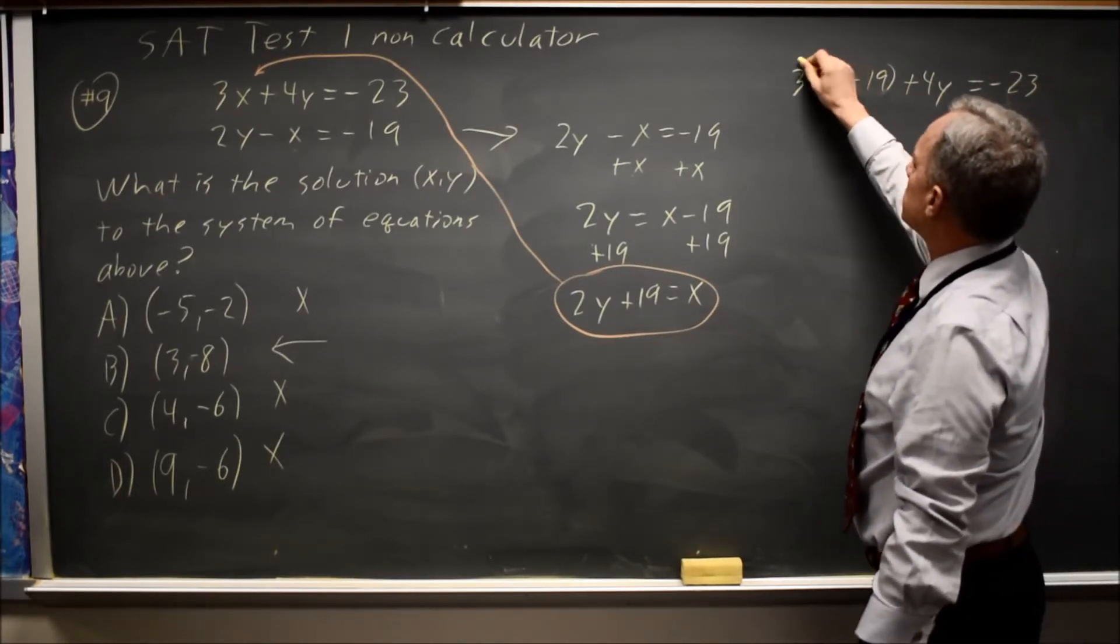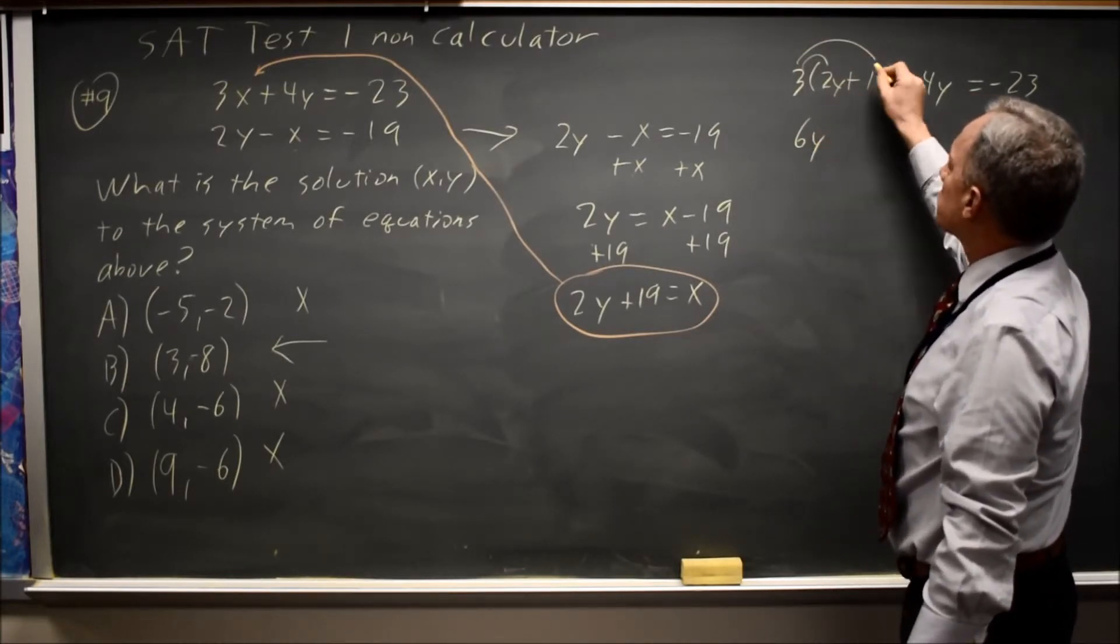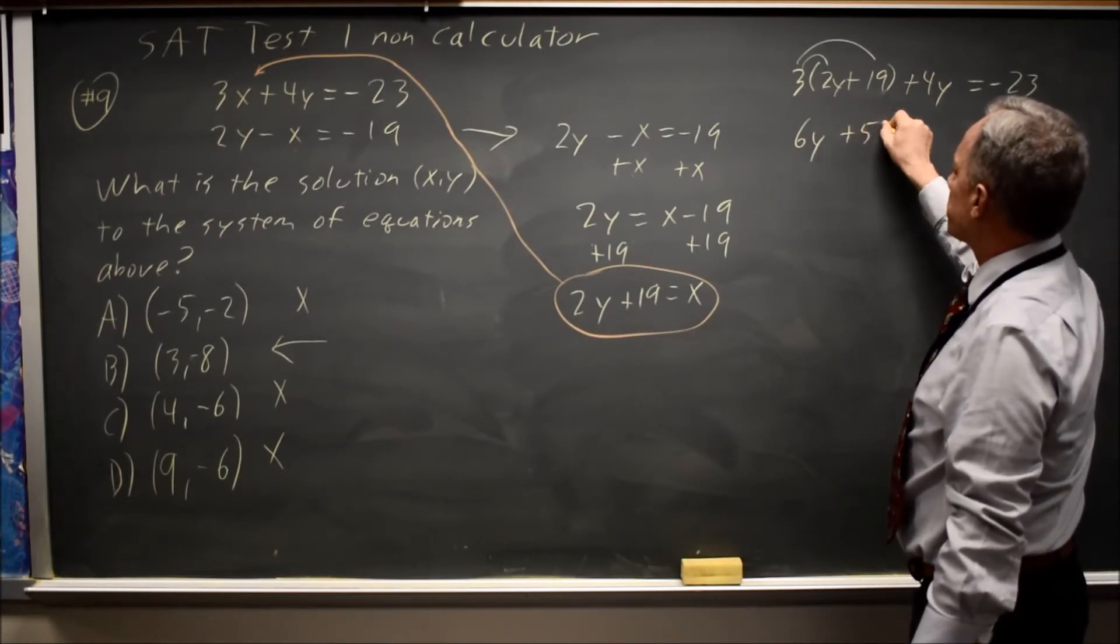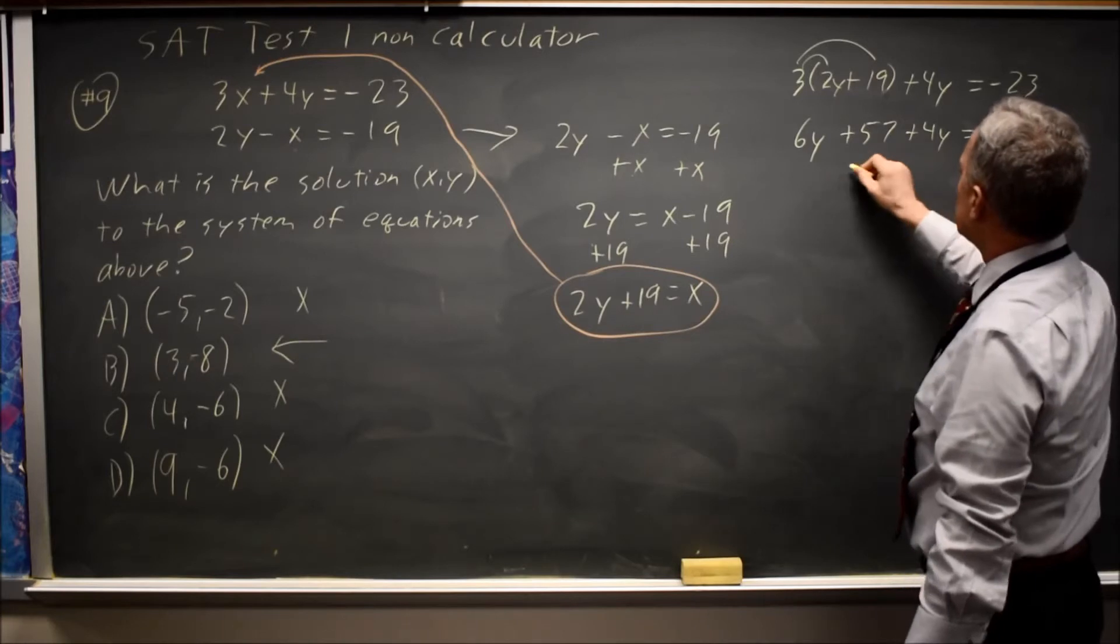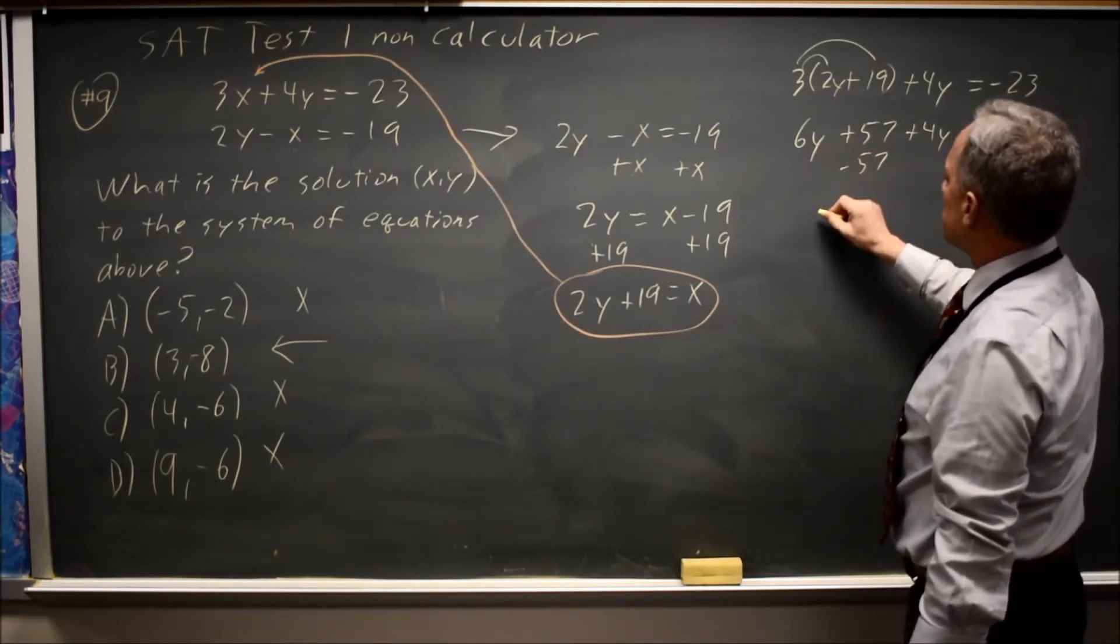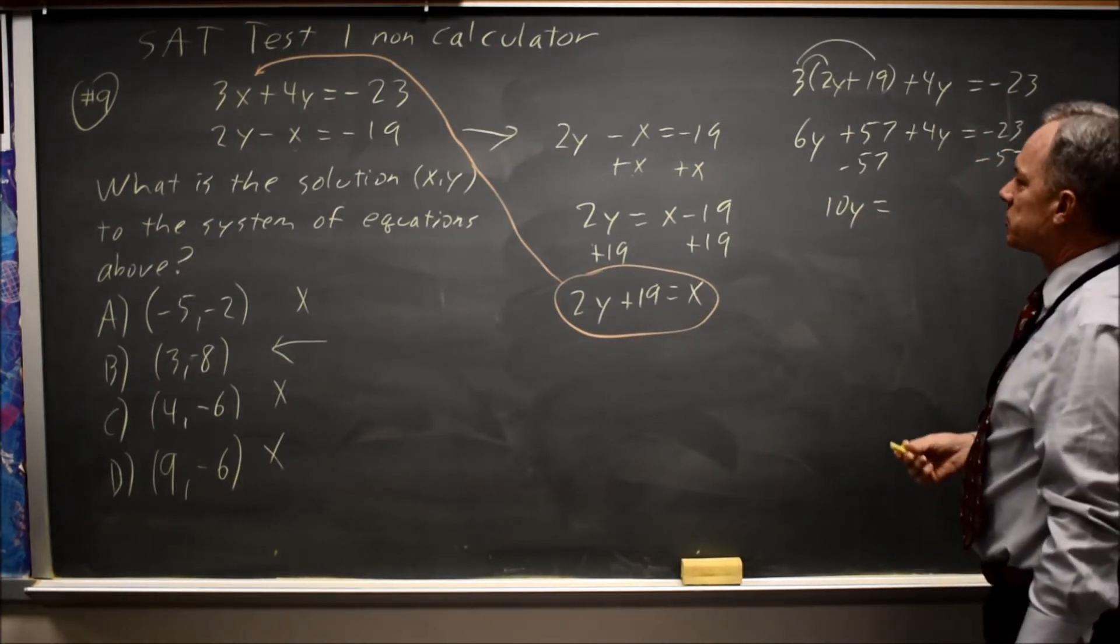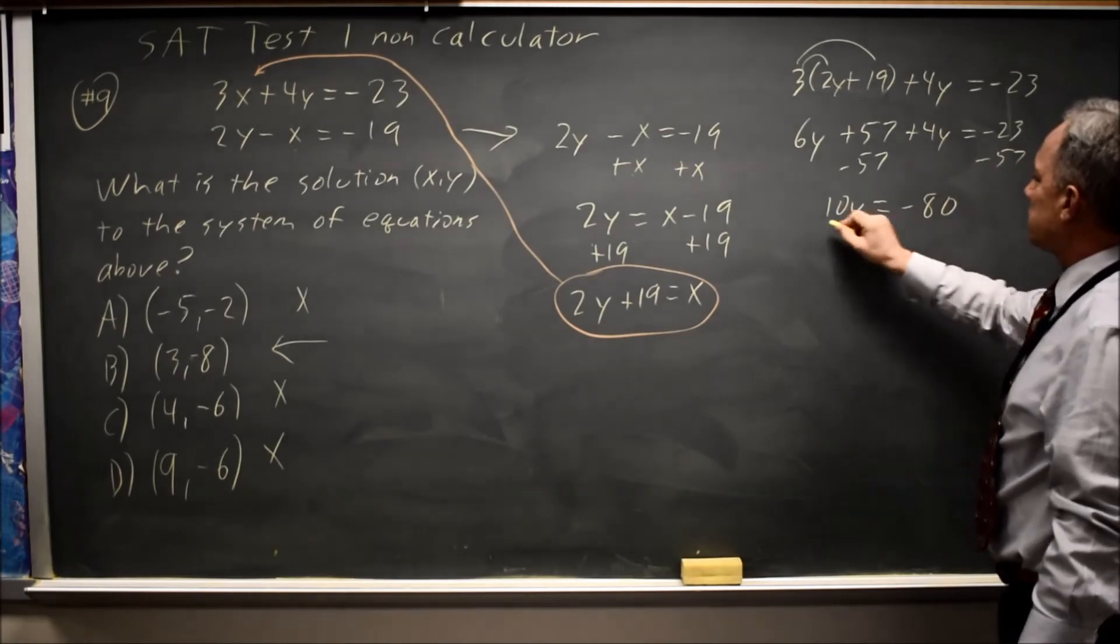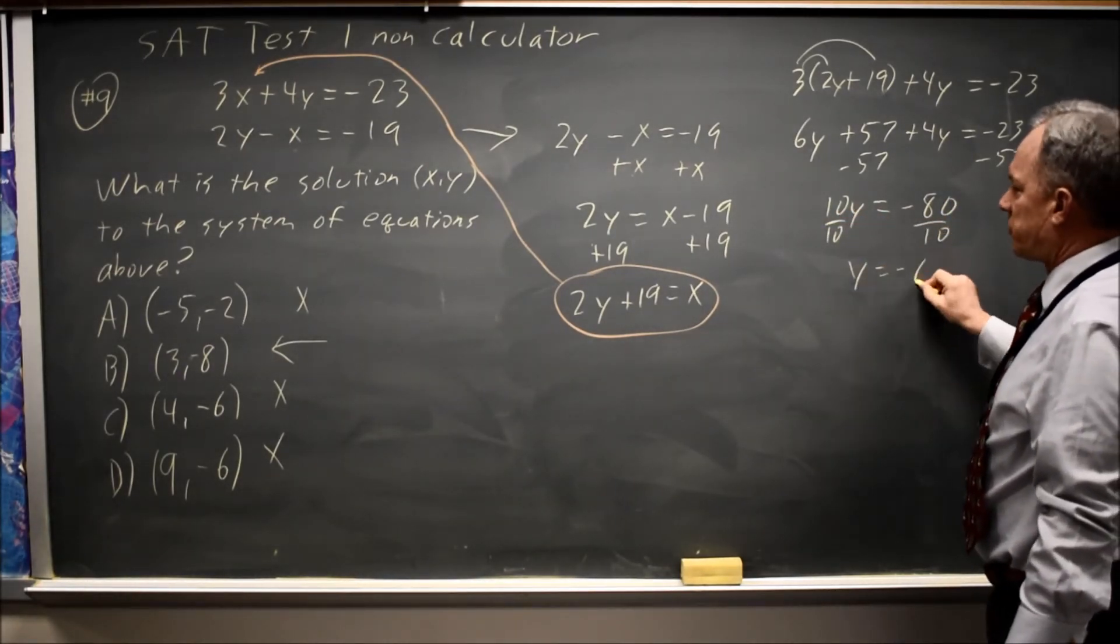Distributing to both terms. 3 times 2y is 6y. 3 times 19 is 57 plus 4y equals negative 23. Subtract 57 from both sides. And I get 6y plus 4y is 10y. 57 minus 23 is negative 80. Divide by 10. Y equals negative 8.